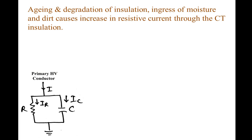Various factors such as aging, degradation of insulation, and increase of moisture and dirt cause an increase in resistive current through the CT insulation. Therefore, in addition to the capacitive current, a small resistive current also starts flowing through the insulation.